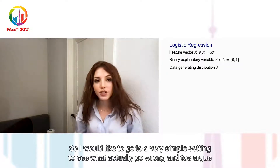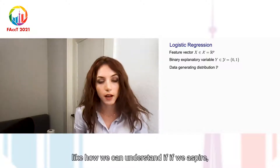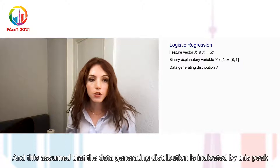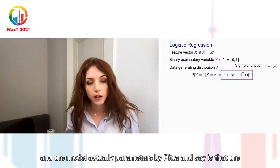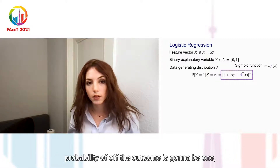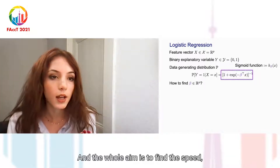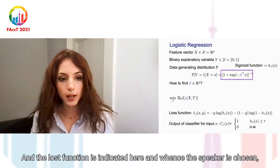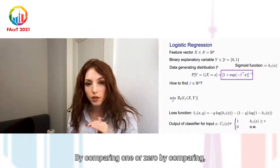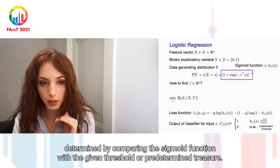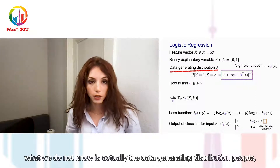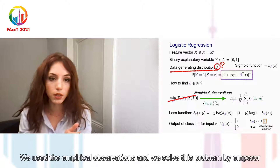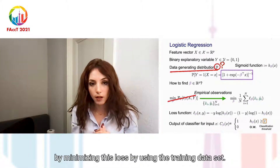I'd like to go to a very simple setting to see what can go wrong and to argue how we can understand if a classifier is fair or not. We're going to consider a logistic regression classifier in a binary classification setting. The data-generating distribution is indicated by P. The model, parameterized by beta, says the probability of outcome being 1 given the feature vector is determined by the sigmoid function. The aim is to find beta by solving a loss minimization problem. Since we do not know P, we use empirical observations and solve the problem by minimizing the loss using the training dataset.